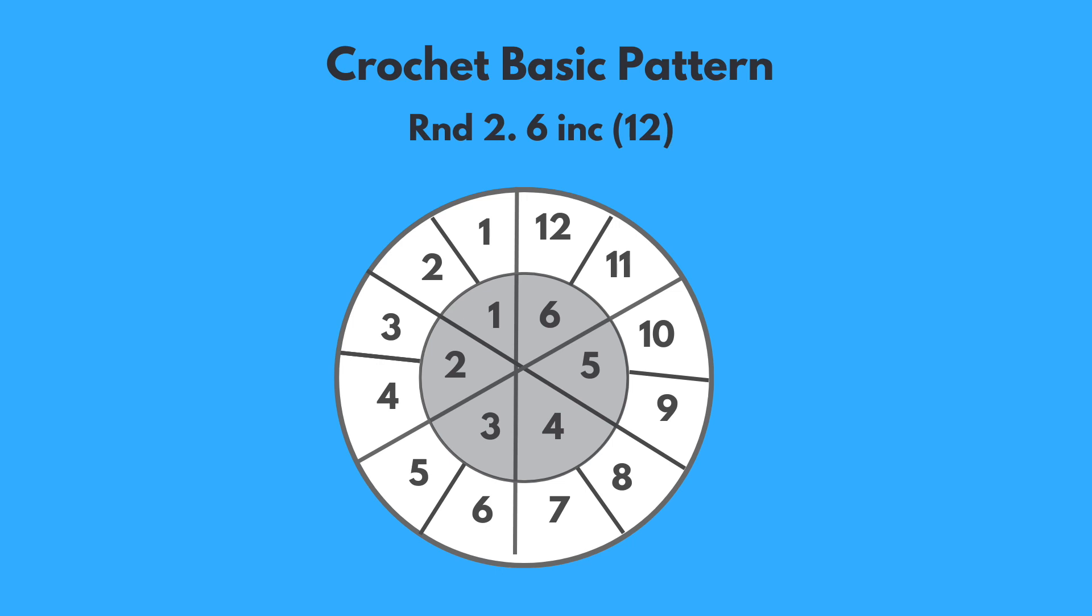The gray circle in the center represents the first round where we crochet 6 single crochet stitches in the magic loop.